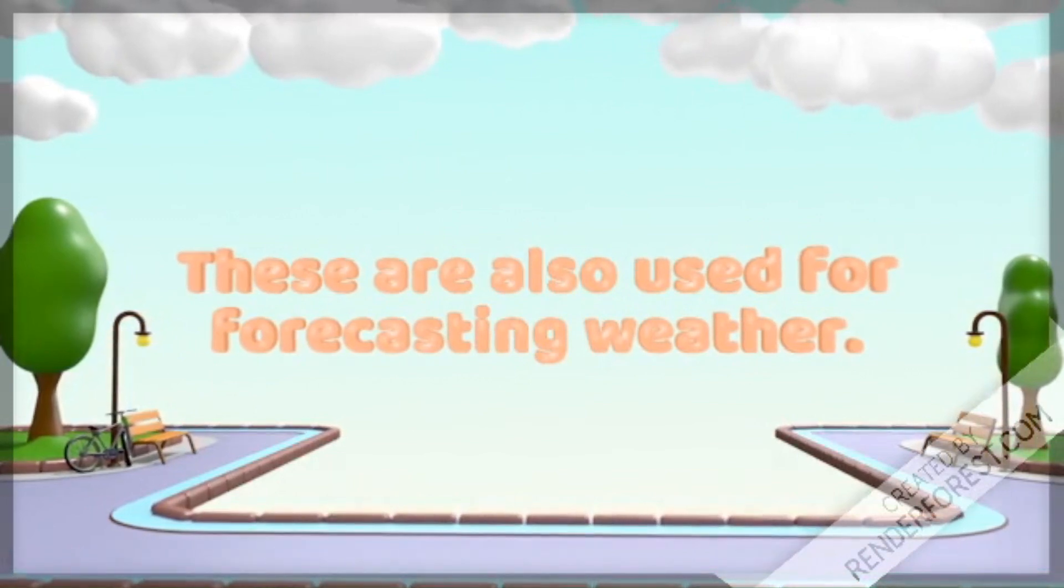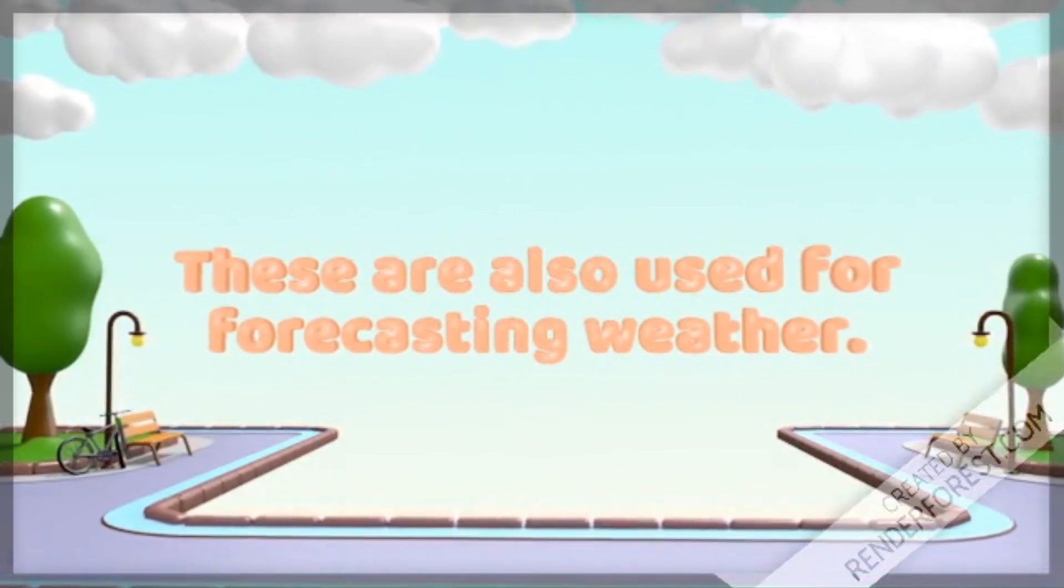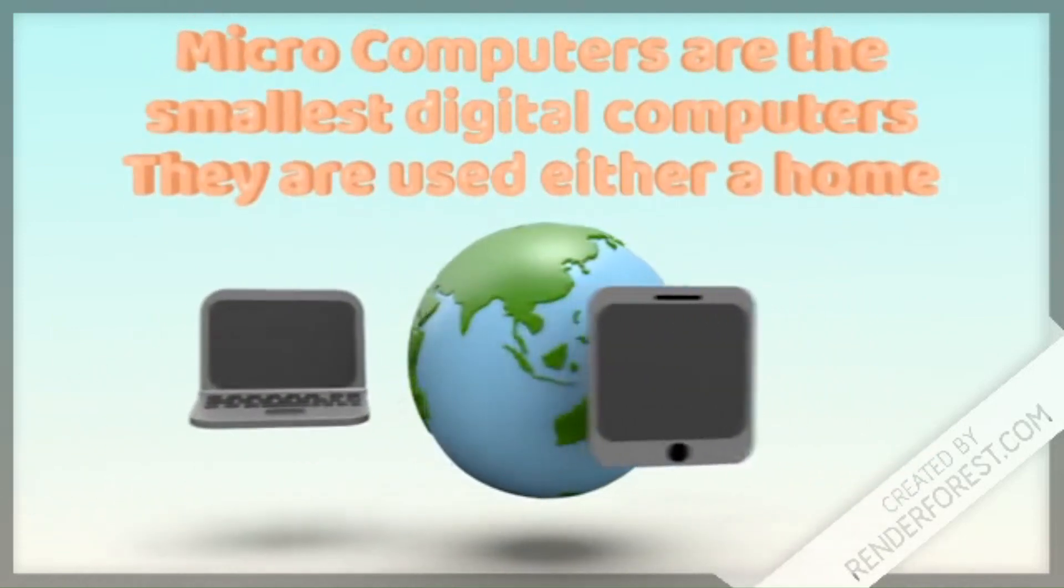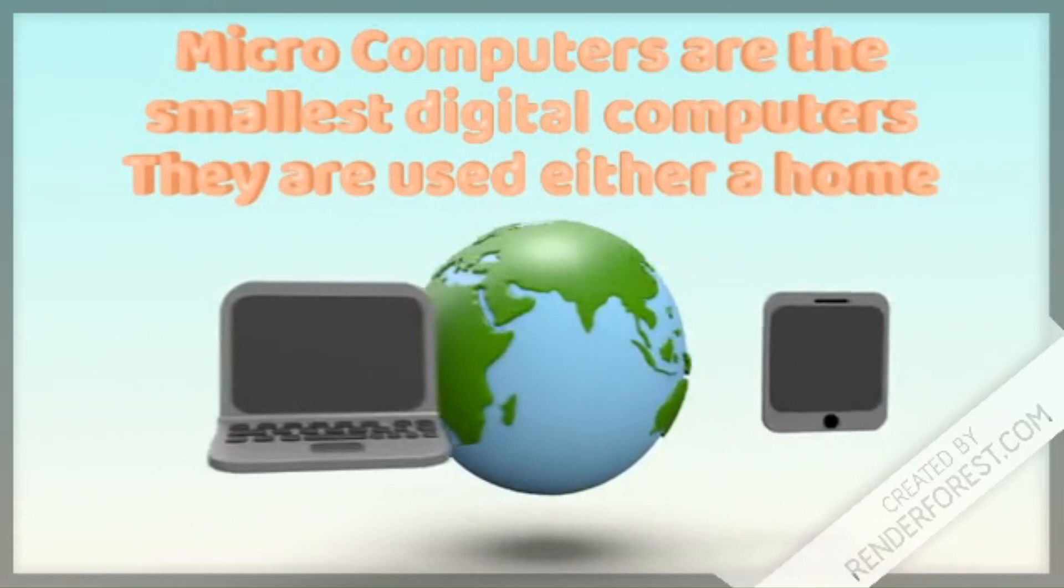On the basis of speed, size, and memory, computers are classified as Microcomputers, Mini Computers, Mainframe Computers, and Supercomputers. Microcomputers are the smallest digital computers, used either at home or in the office. They are known as personal computers.